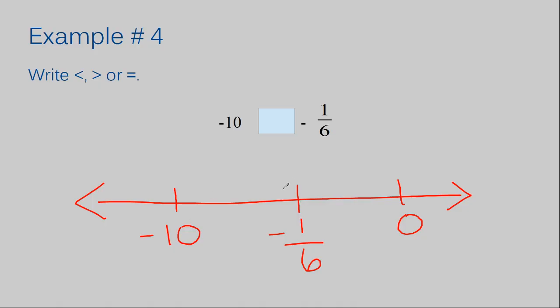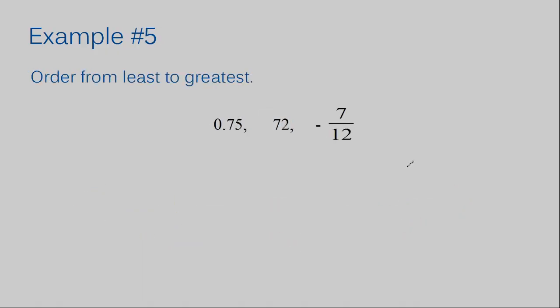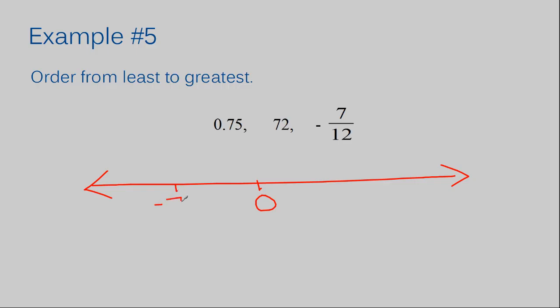Example number five appears to be the first example where we're going to have to do a little more work. My first thought is to put all of the numbers in the same form — comparing a fraction, a decimal, and a whole number can be tricky. But because one of our numbers is negative and the other ones are positive, the negative seven-twelfths is going to be on the left side of zero no matter what it looks like.